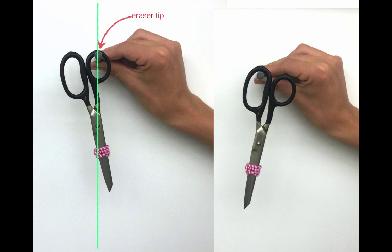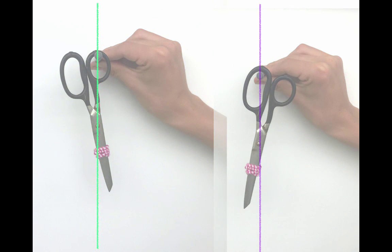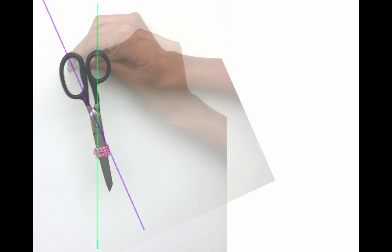And by suspending the scissors from a second point, we got a second line, and the place where those two lines cross locates the center of mass of the scissors. So this method may be used to locate the center of mass for any object.